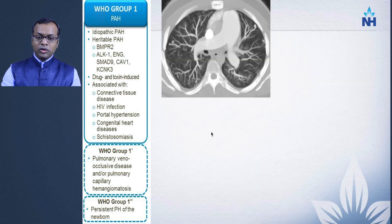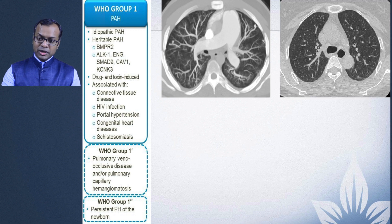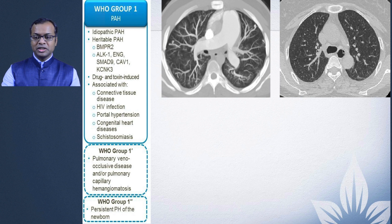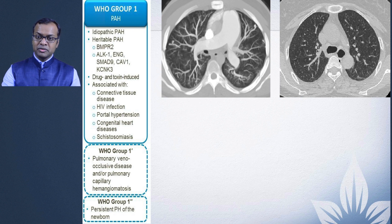Look for AV malformations or shunts which can explain the pathology. Also look for connective tissue disease features — for example, a patient with scleroderma showing a grossly enlarged esophagus, who on investigation was found to be suffering from systemic sclerosis.